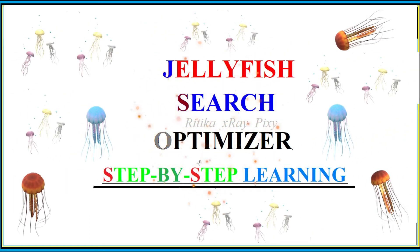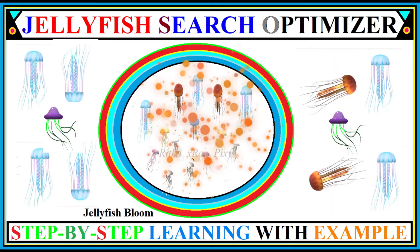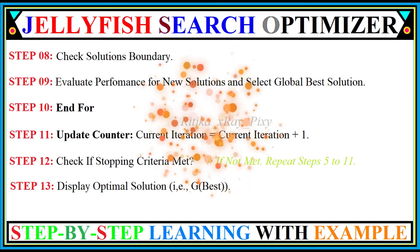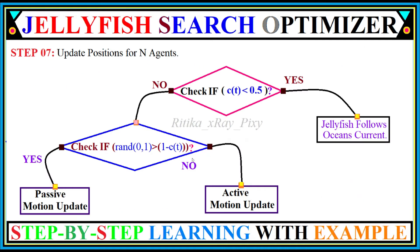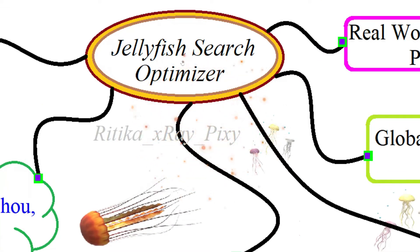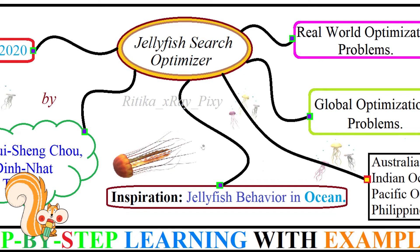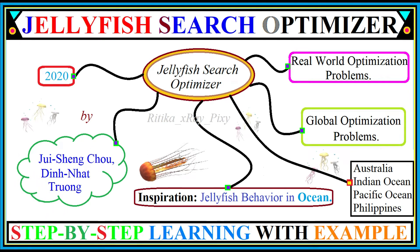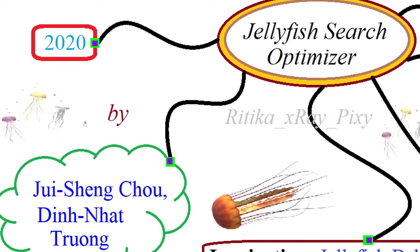This video is based on the Jellyfish Search Optimizer. We will try to understand what this algorithm is all about, how it works, the various steps used in the algorithm, mathematical models for jellyfish movements, position update and other activities. This algorithm is also named the Artificial Jellyfish Search Optimizer, and it is a recently proposed swarm intelligence metaheuristic optimization algorithm.